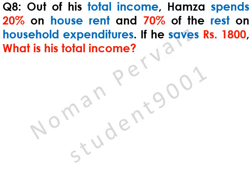Question number 8 is: out of his total income, Hamza spends 20% on house rent and 70% of the rest on household expenditures. If he saves rupees 1800, what is his total income? Let's see its solution.